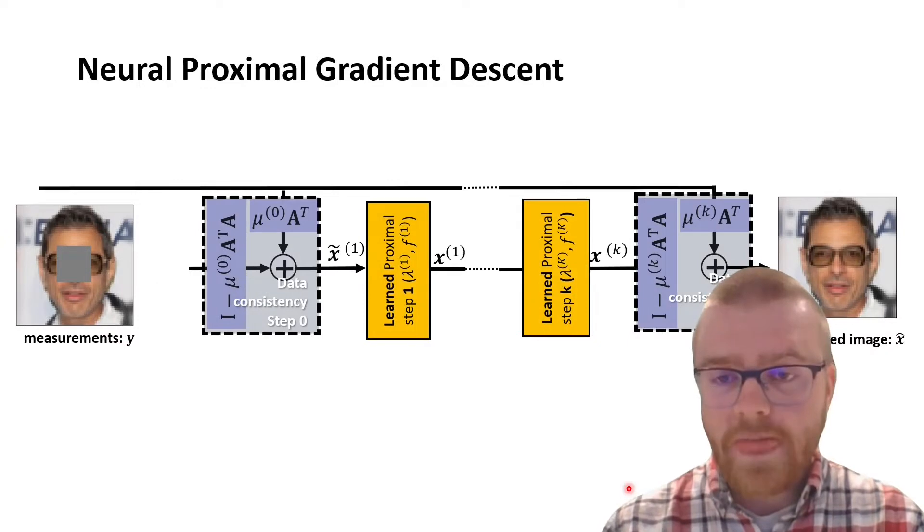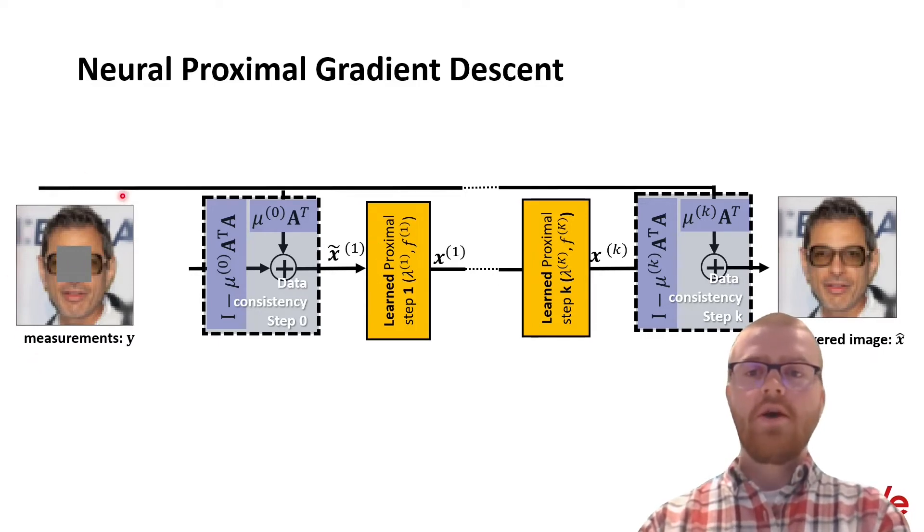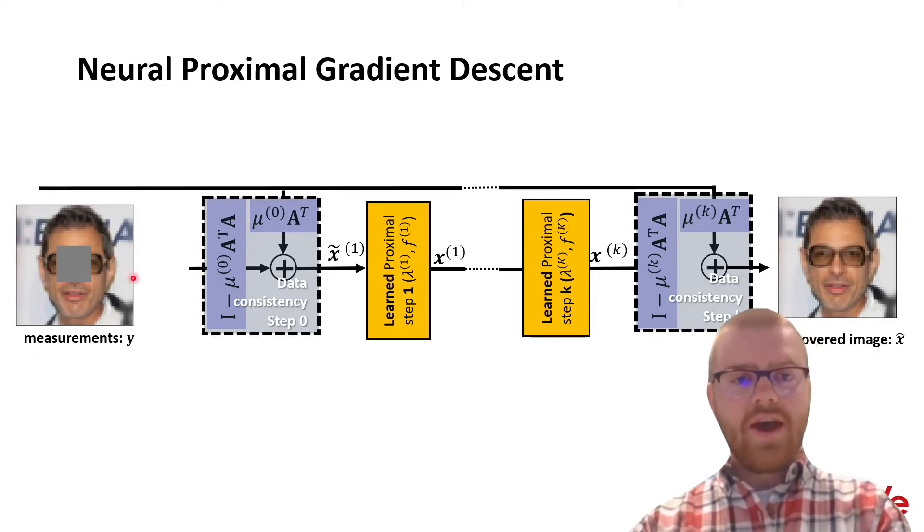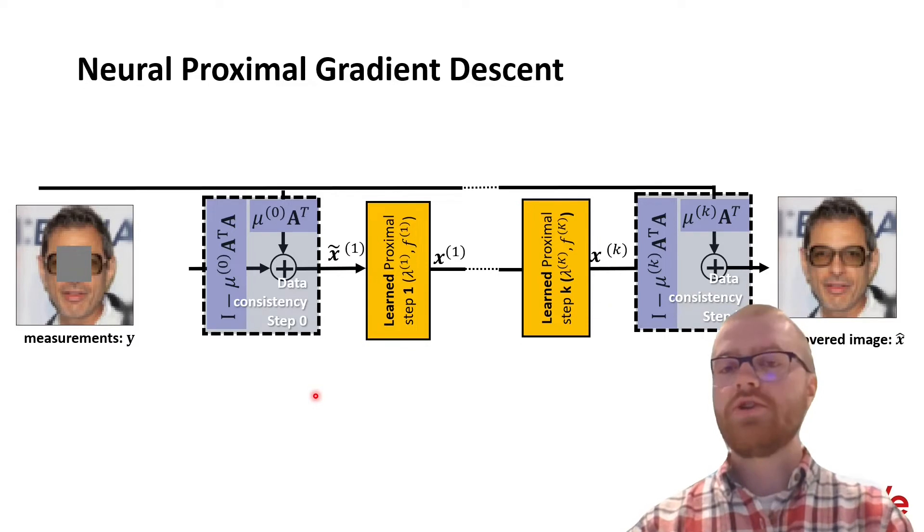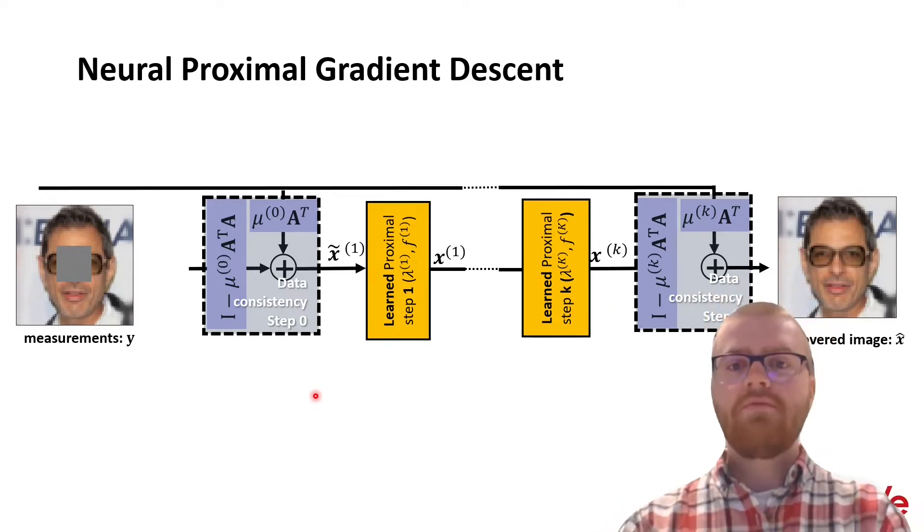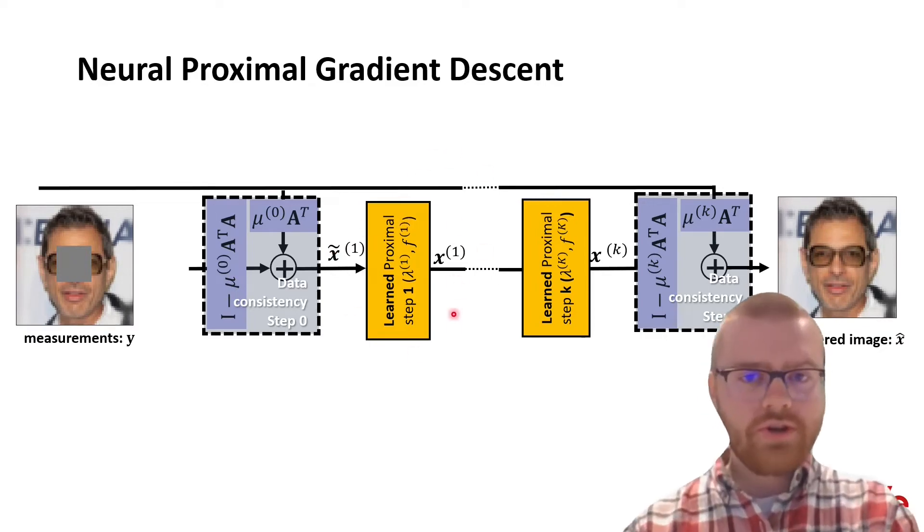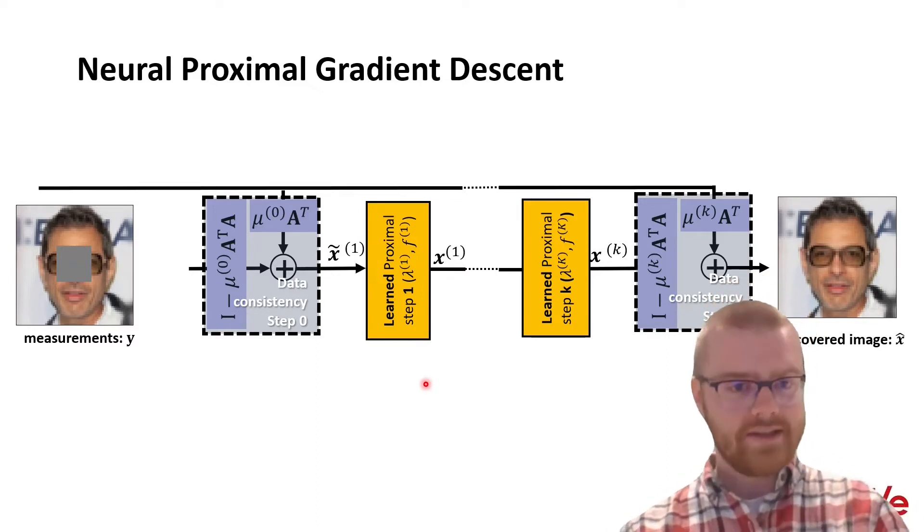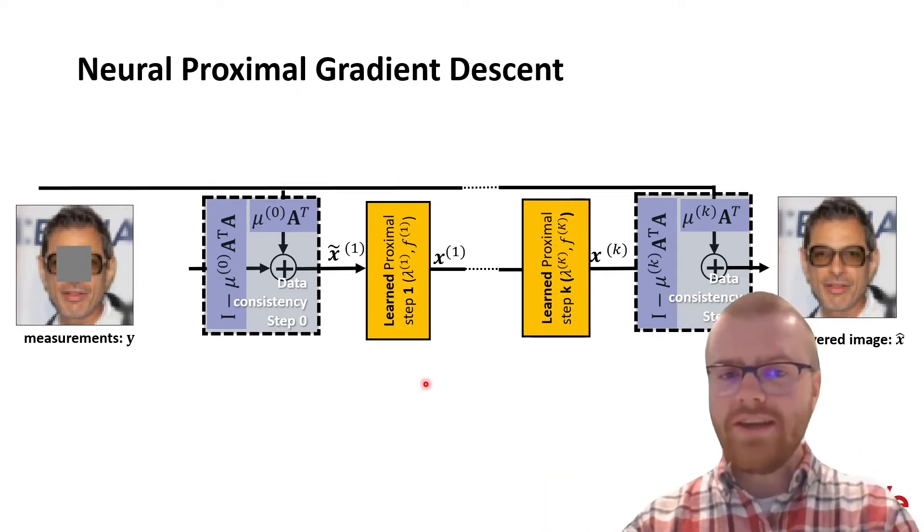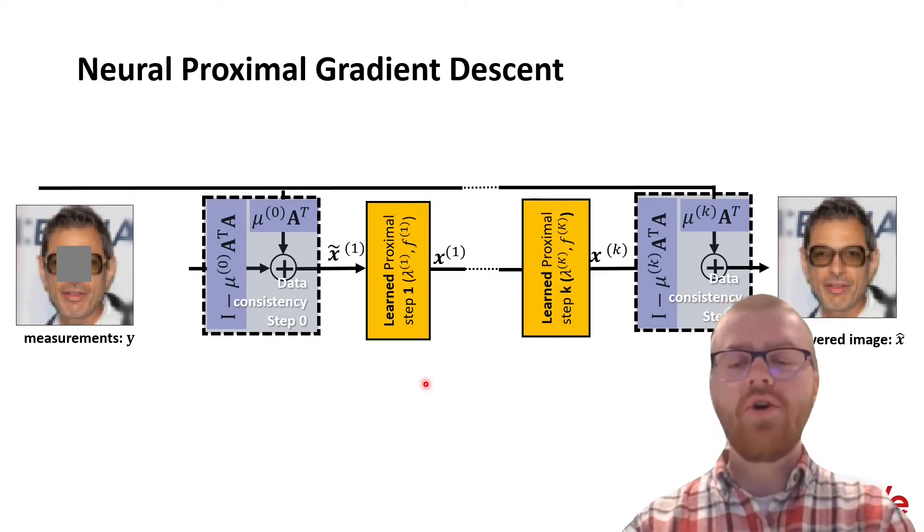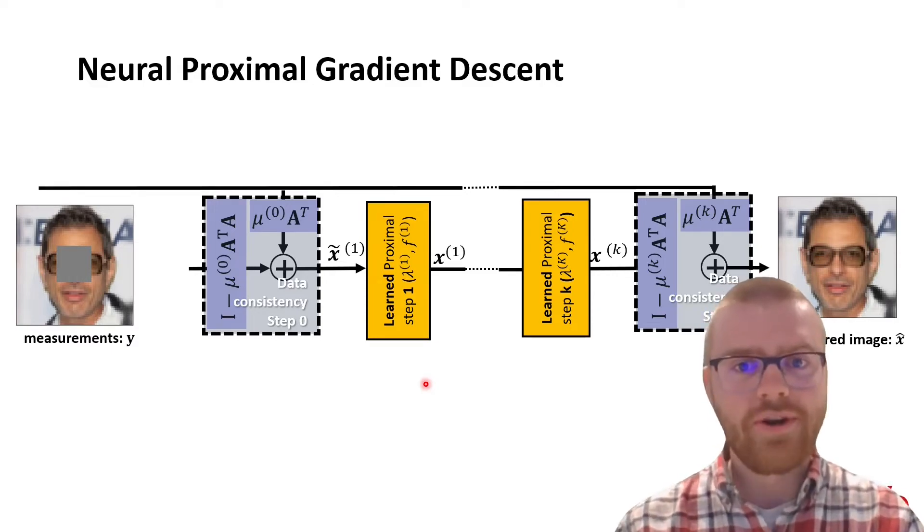Specifically this could look something like this, where we have a measurement Y of, for example, an image of a celebrity, but we are missing part of this image and we want to reconstruct, recover this full image here on the right. And over here we are showing the neural proximal gradient descent algorithm, where we have data consistency steps and learned proximal steps. Popular choices for this learned proximal step could, for example, be a UNET or a RESNET. However, these discriminative neural networks, we don't really know what's going on there under the hood. So, we have chosen to explore whether you can also use normalizing flows for this learned proximal step.